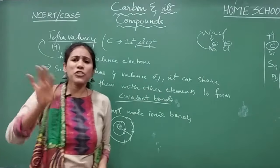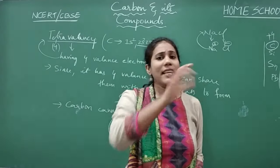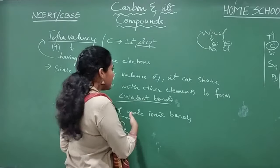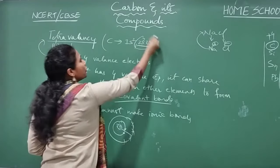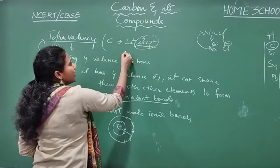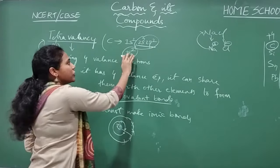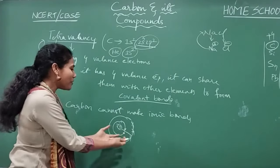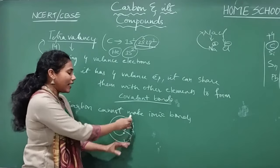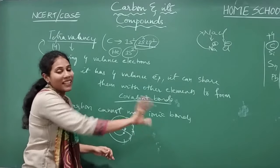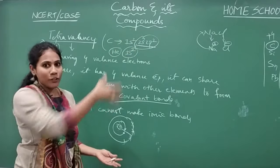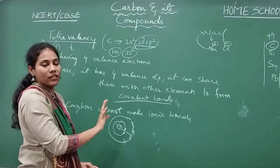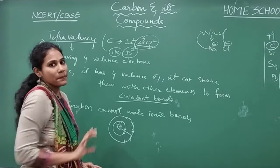Why should an atom lose or gain electrons? In order to have noble gas electronic configuration — 8 electrons in the valence shell. For carbon, either it should lose 4 electrons, giving an electronic configuration of 1s2, which equals helium's configuration. But losing is highly impossible because the electrons are very near to the nucleus and are tightly held. So that option is eliminated for achieving stability.